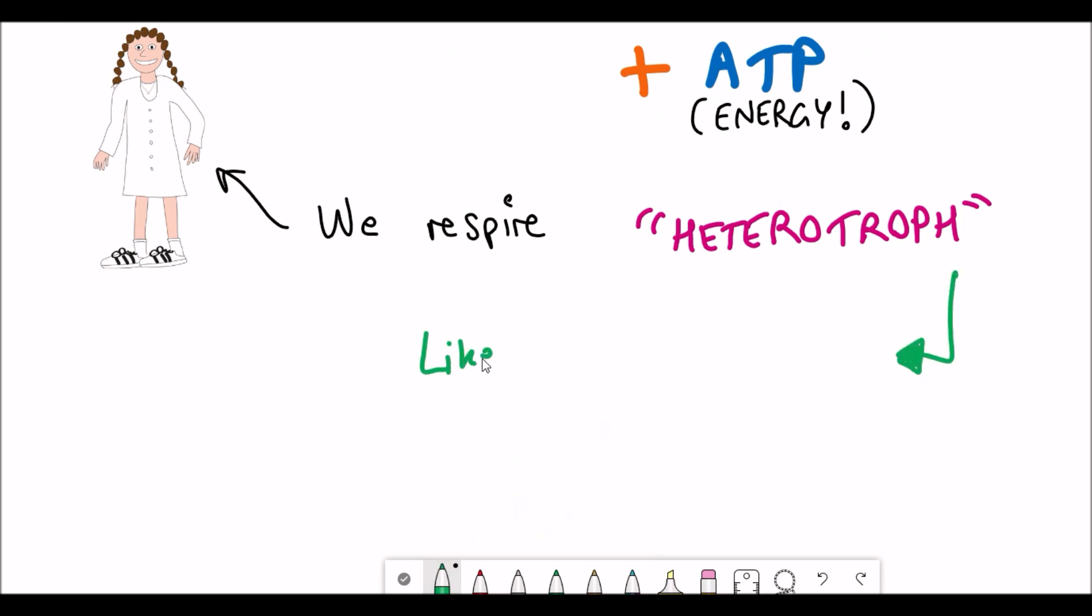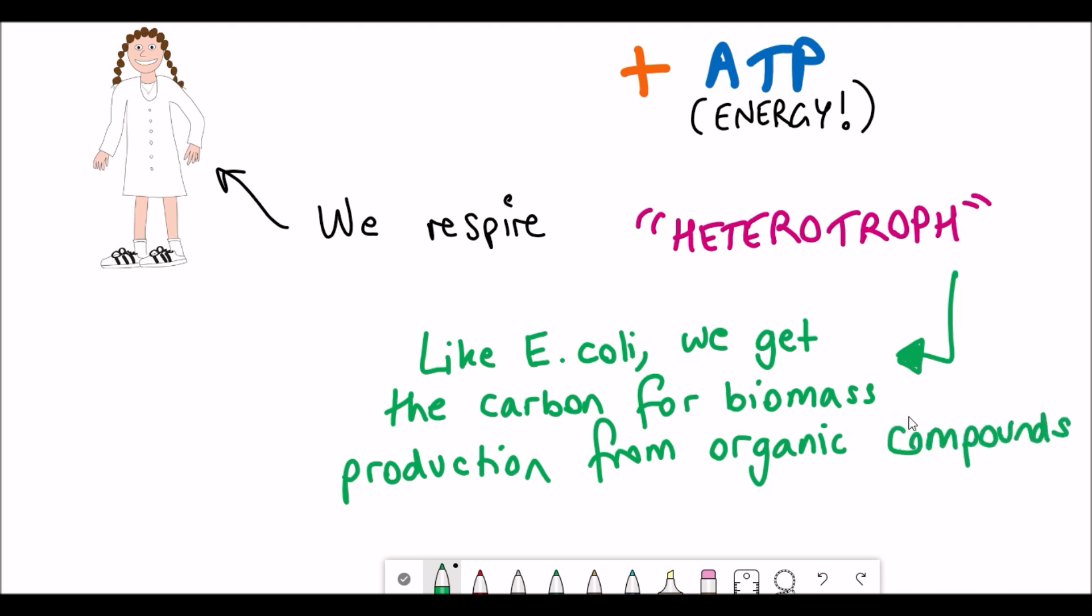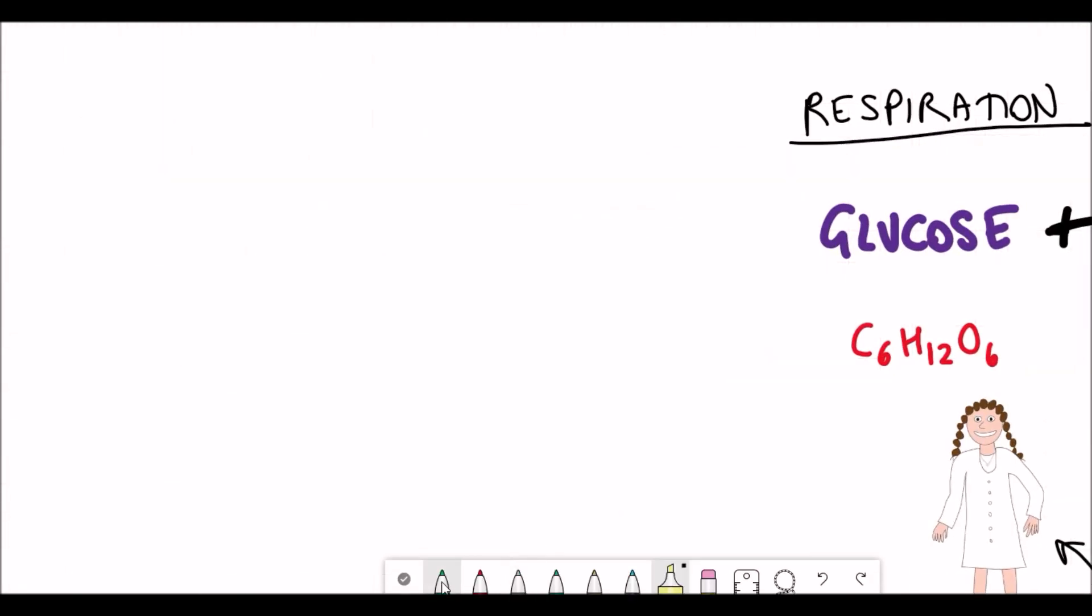So what is a heterotroph? Simply put, a heterotroph is a fancy term used to describe organisms that get their carbon for biomass production from organic compounds produced by other organisms. This is the reason why we eat food because we can't actually make it ourselves. I'm not going to complain about that. Do you like to eat?